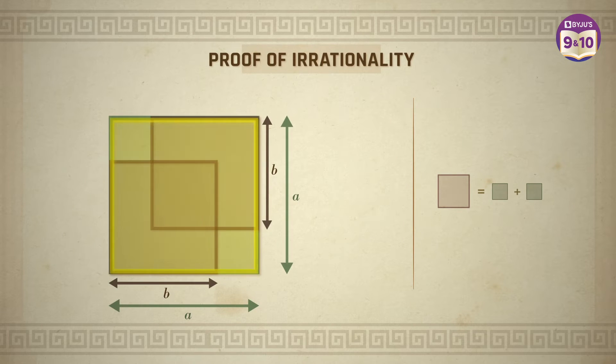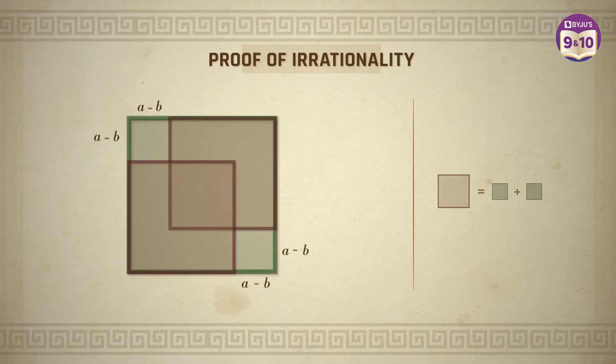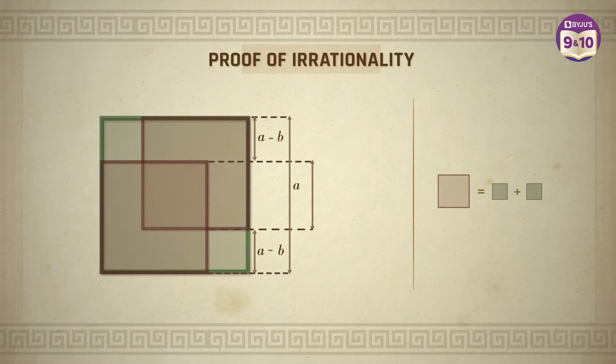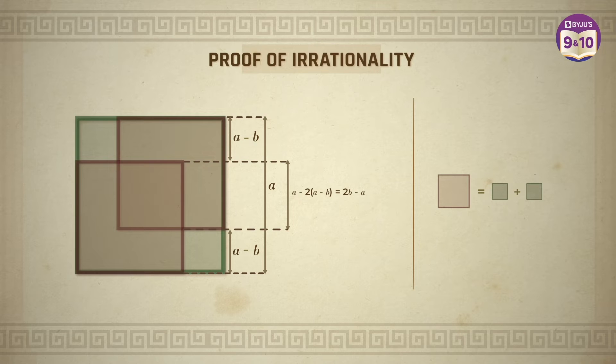We had a square of side a and another square of side b. So this side will be of length a minus b. That means the side length of these squares is a minus b. Now what will be the dimensions of the part that is overlapping? It will be a minus twice of a minus b. Length of the bigger square minus these two sections.